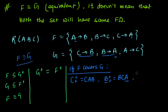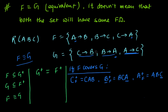Similarly, we find the closure of a in f: a determines b, and b determines c. So a plus contains a, b, and c — as c is there, this also holds. Since all the functional dependencies in g can be derived from f, we say that f covers g.